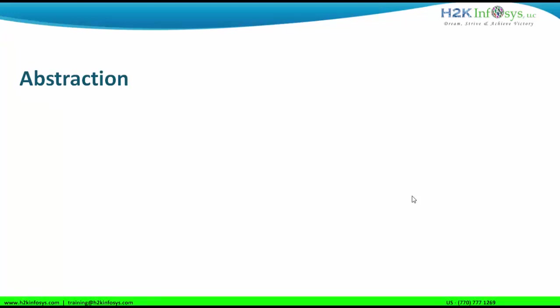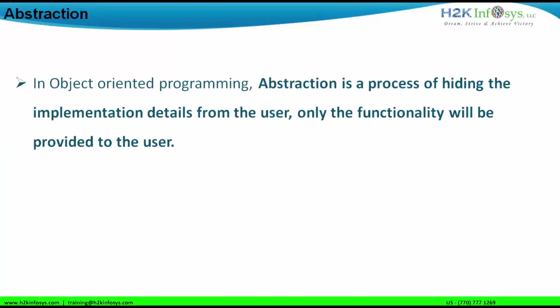In this particular session, let us understand what is abstraction. First of all, what is abstraction as a whole? It means it is nothing but a process by which you hide the implementation details from the user, and the user is only provided the functionality details. Abstraction is a concept of object-oriented programming which says that you don't need to basically show how a particular thing is working.